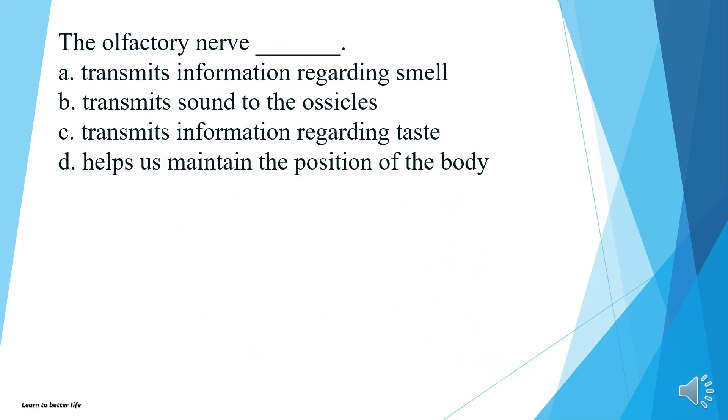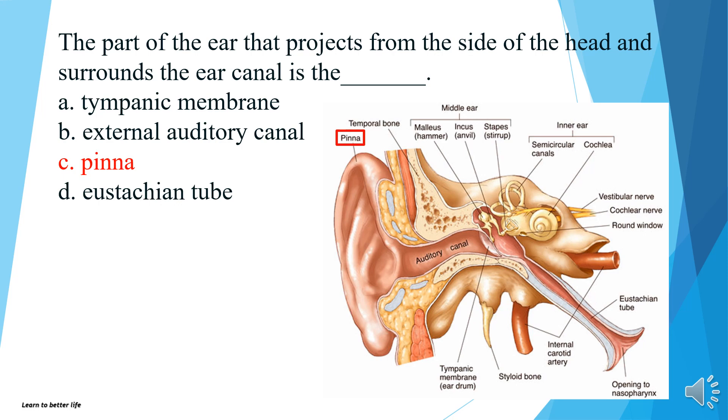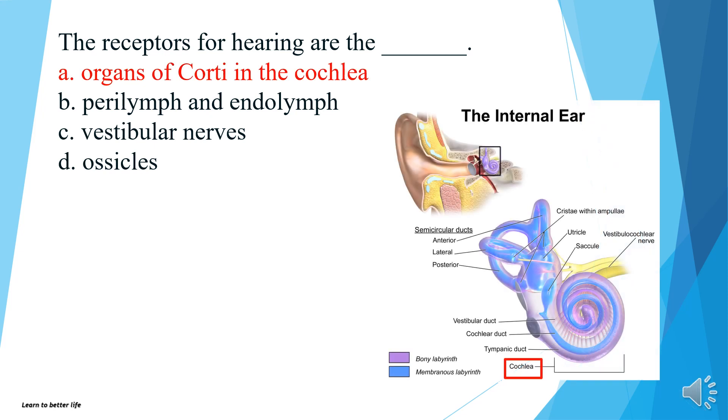The olfactory nerve transmits information regarding smell, transmits sound to the ossicles, transmits information regarding taste, or helps us maintain the position of the body? The answer is A, transmits information regarding smell. The part of the ear that projects from the side of the head and surrounds the ear canal is the tympanic membrane, external auditory canal, pinna, or eustachian tube? The answer is C, pinna. The receptors for hearing are the organs of Corti in the cochlea, perilymph and endolymph, vestibular nerves, or ossicles? The answer is A, organs of Corti in the cochlea.